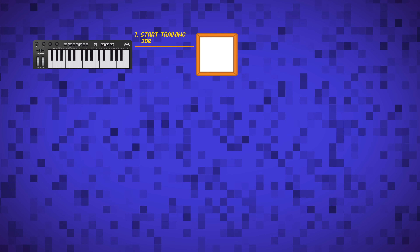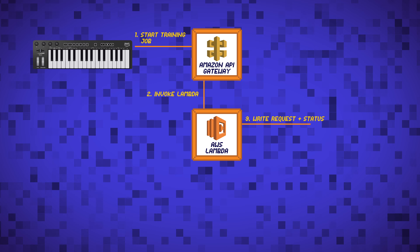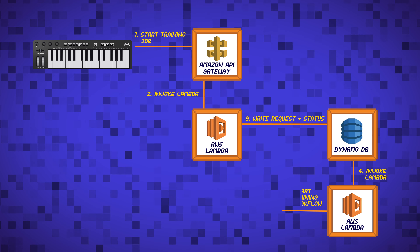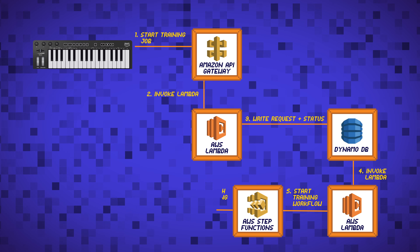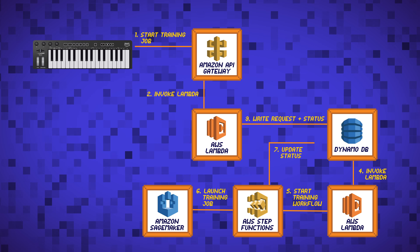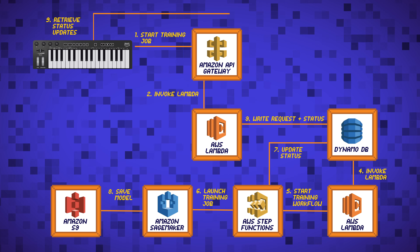Let's peek under the hood at the AWS architecture used to train this model. In this diagram, first the user selects to train a model from the AWS console. This launches the training job by selecting the various hyperparameters and dataset filtering tags, then calls API Gateway, which calls Lambda, which then writes a request and its status to DynamoDB. This then triggers a Lambda function to start the training workflow, which uses Step Functions to launch the training job on SageMaker. The Step Functions monitor the status and add status updates in DynamoDB. The Deep Composer console pulls the back end and displays updates on the console.